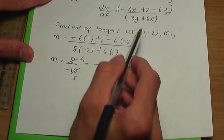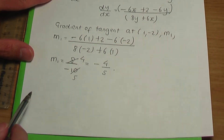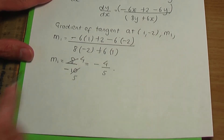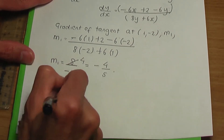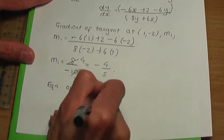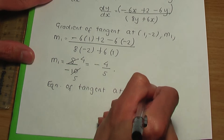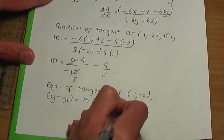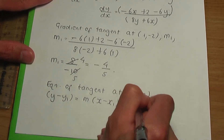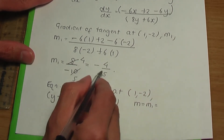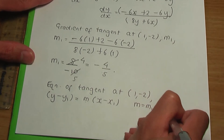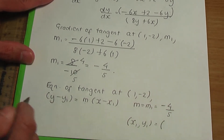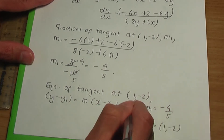We have the gradient of the tangent and the point (1, −2) through which it passes. Since the tangent is a straight line, let's use the formula y − y₁ = m(x − x₁), where m = −4/5 and (x₁, y₁) = (1, −2).